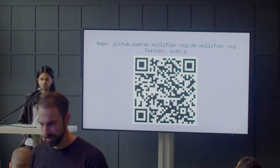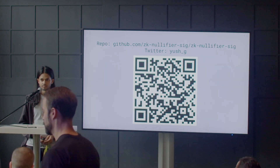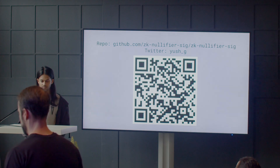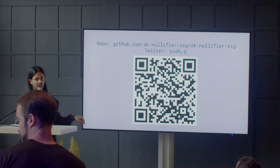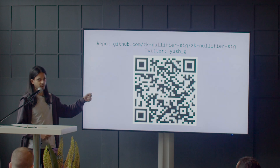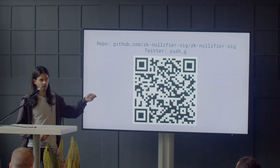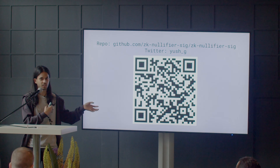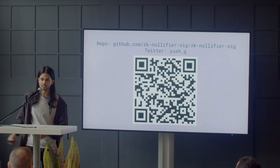How many gates is the SNARK circuit that creates or validates this? Because we're only calculating hashes and exponents of the elliptic curve, it's fairly cheap — we think it's around 100,000 constraints, but we think we can optimize it a little bit to be probably a little bit less.